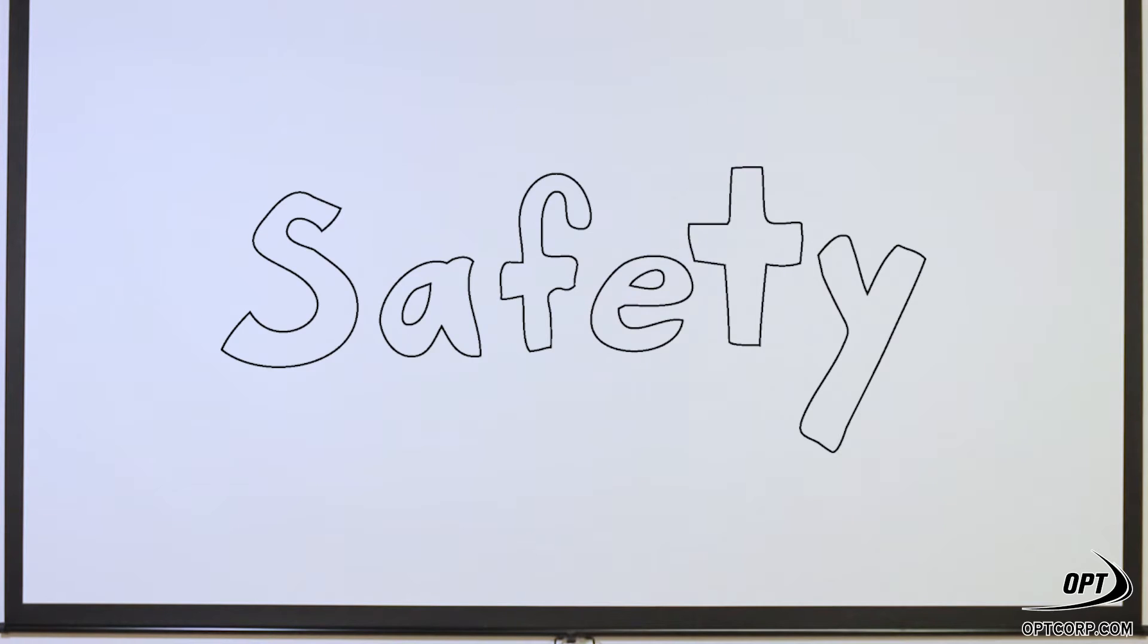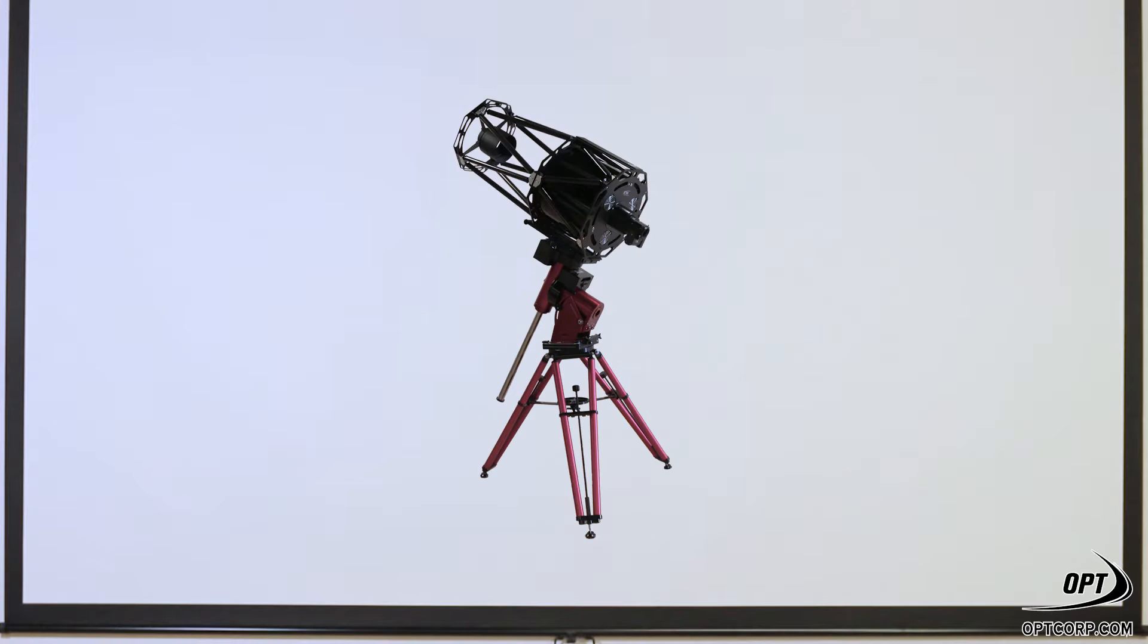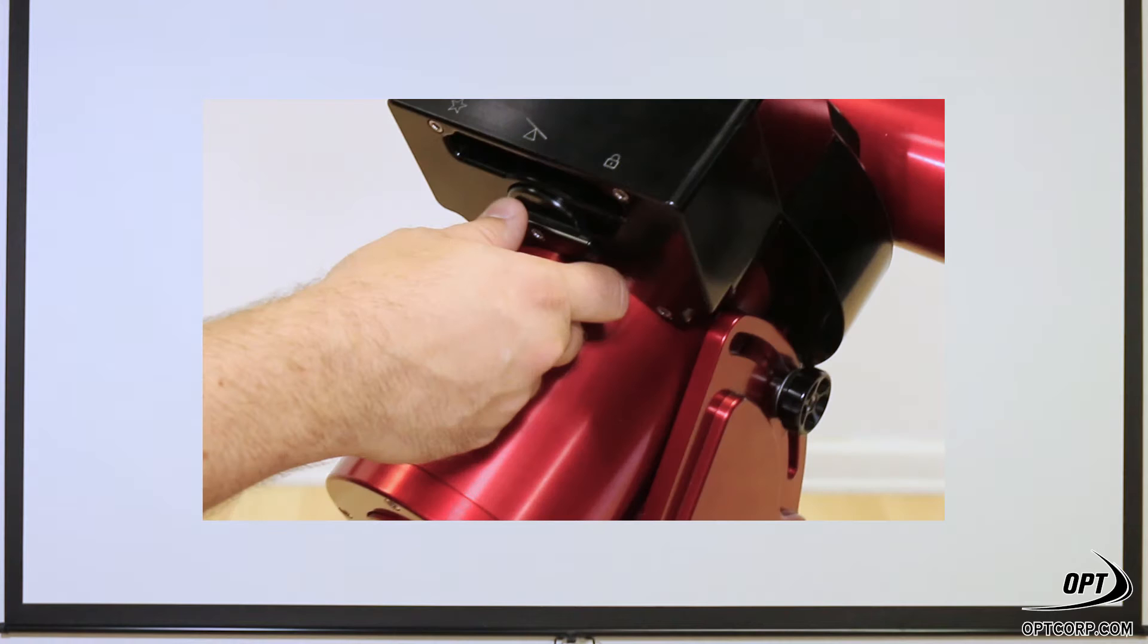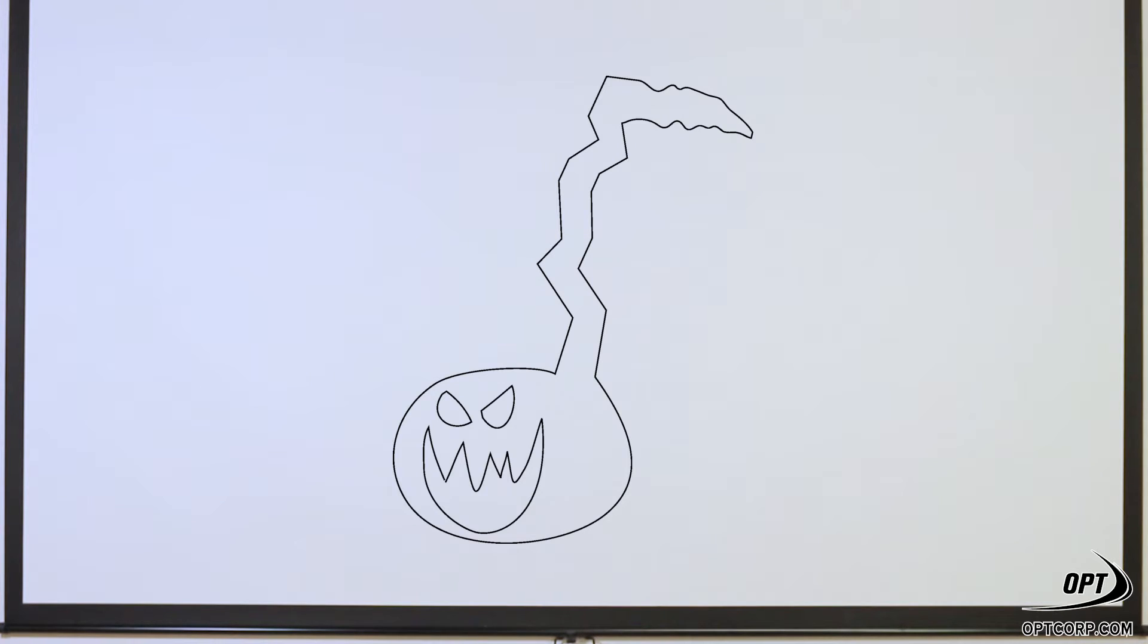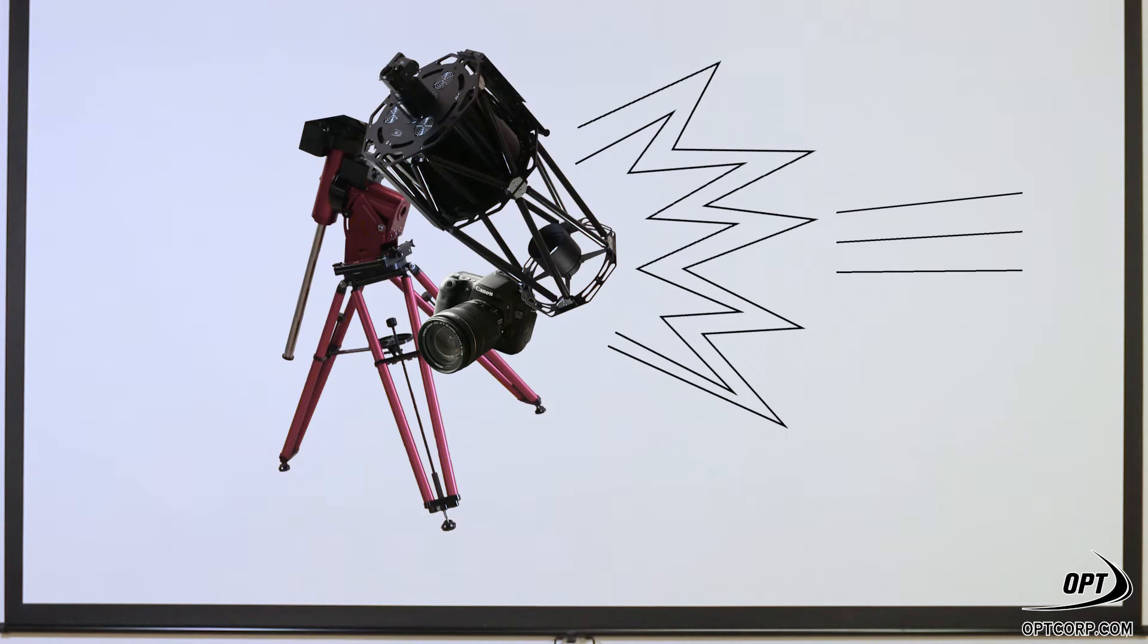First of all, safety. I can't tell you how many times I've had customers tell me they've put their telescope and camera on their mount first without the counterweights on. They accidentally unlocked their right ascension axis and they heard the worst sound you can possibly hear at a star party or at night imaging: that of their telescope or camera running into their tripod.